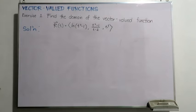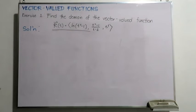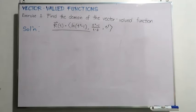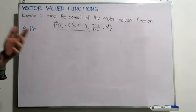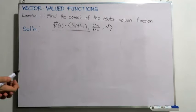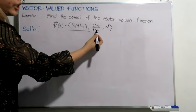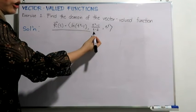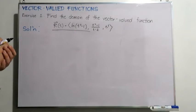For our first exercise, we are asked to find the domain of the following vector-valued function denoted by capital R of T. Recall that in order to obtain the domain of a vector-valued function, we need to get the intersection of the domain of each of its components, namely ln of (T squared minus 1), (T squared minus 1) over (T minus 2), and e raised to T.